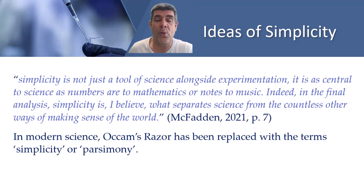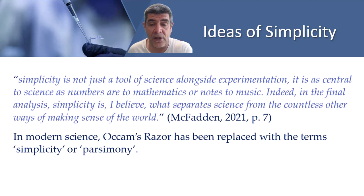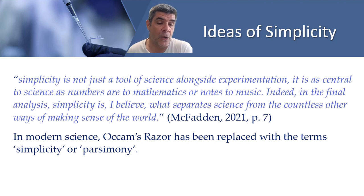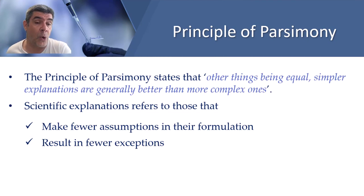The word razor was an analogy to the process of shaving away unwanted arguments when deriving conclusions. McFadden wrote: simplicity is not just a tool of science alongside experimentation — it is as central to science as numbers are to mathematics or notes to music. Indeed, in the final analysis, simplicity is what separates science from the countless other ways of making sense of the world. In modern science, Occam's razor has been replaced with the term simplicity or parsimony. The principle or law of parsimony states that, other things being equal, simpler explanations are generally better than more complex ones.